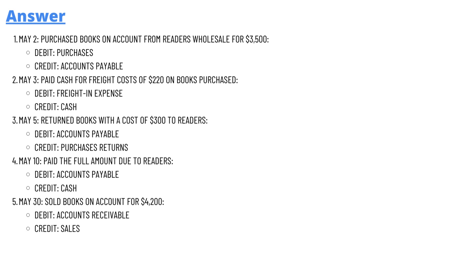By solving the double entry: On May 2, debit Purchases and credit Accounts Payable for $3,500. On May 3, Freight-in Expense is debited and Cash is credited for $220. On May 5, Accounts Payable is debited and Purchase Returns is credited for $300. May 10 is debit Accounts Payable and credit Cash.